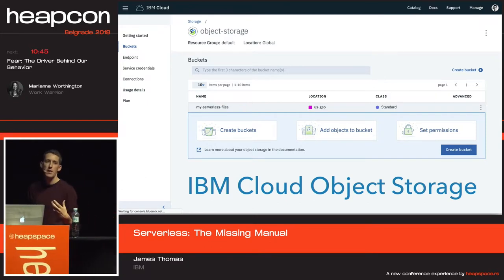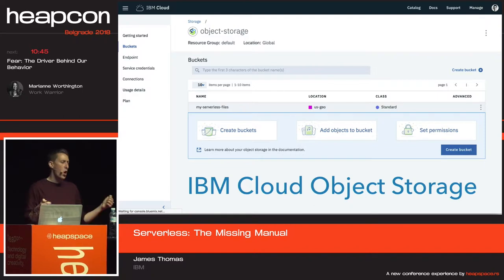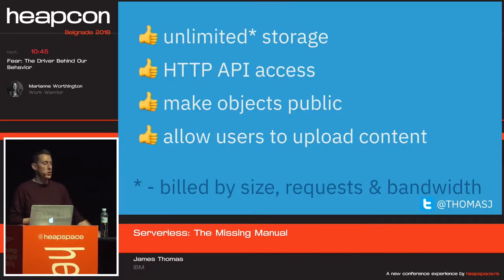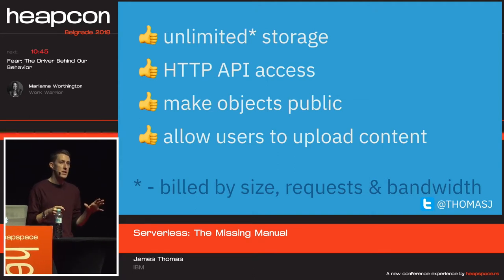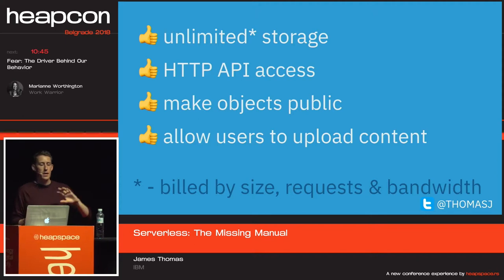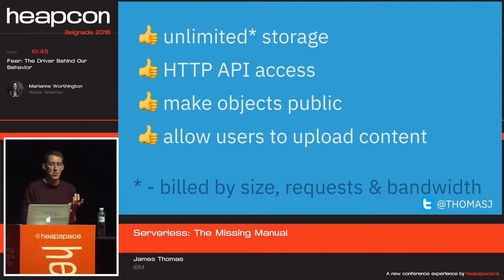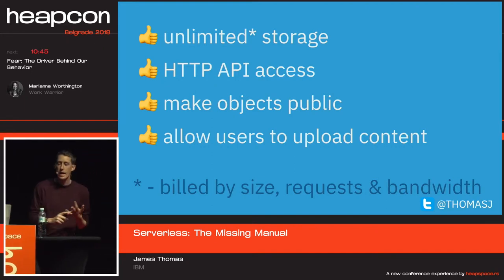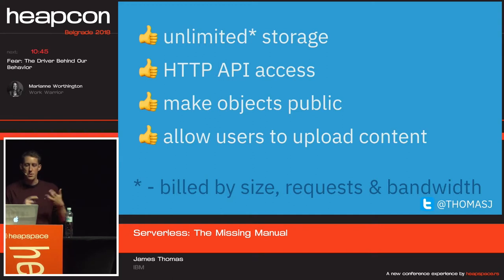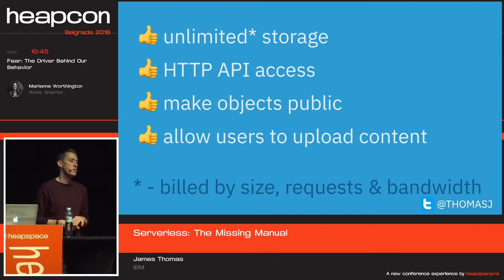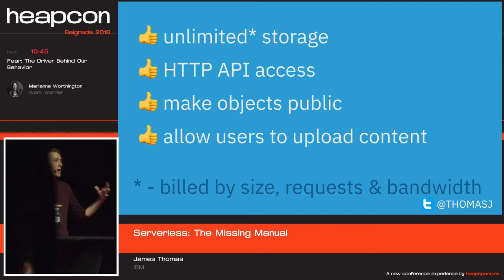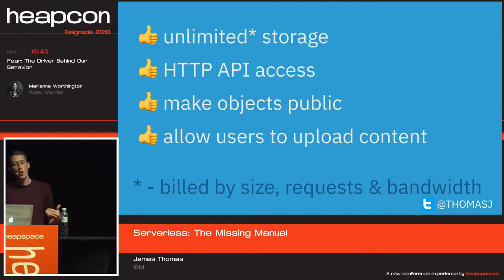Object stores as a category of service have a number of benefits over traditional file system storage. The first is unlimited storage — it's only limited by your ability to pay. You upload your files and at the end of the month you're charged based on usage: how much data you're storing, how many requests you're making, and the amount of bandwidth you're using. It's a serverless approach — charged on usage, not reserved capacity.